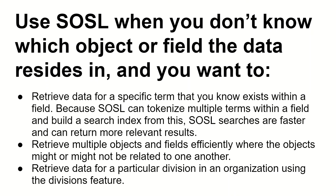We use SOSL when we don't know which object or field the data resides in, and we want to retrieve data for a specific search term or keyword that exists within a field. SOSL can tokenize multiple terms within a field and build a search index, making searches faster and returning more relevant results. The best example of SOSL is the global search bar in Salesforce, where you can search any record name or keyword and get results across all objects. SOSL can also retrieve multiple objects and fields efficiently, even when they are not related to one another, or retrieve data for a particular division using the divisions feature.